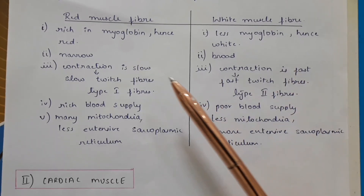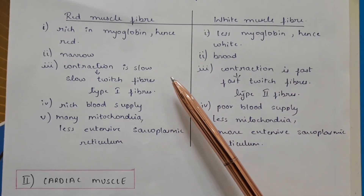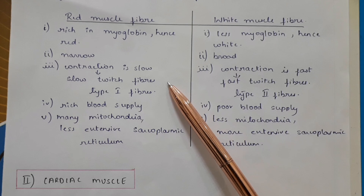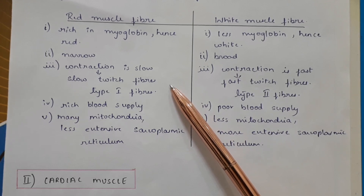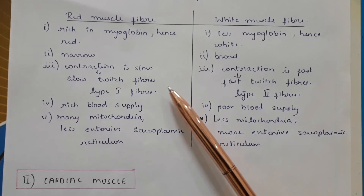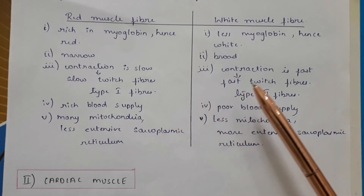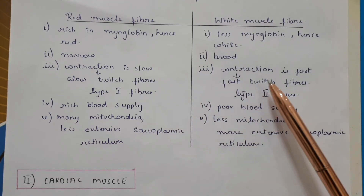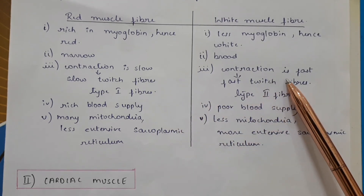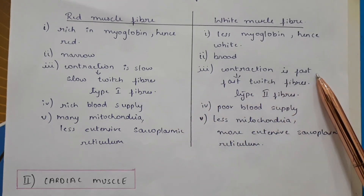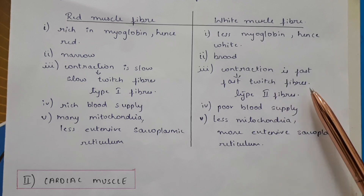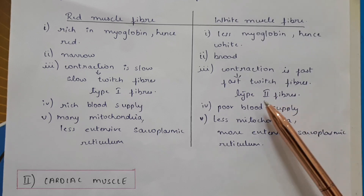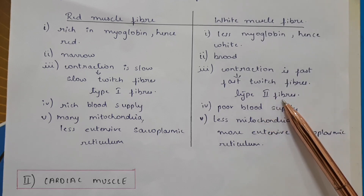Red muscle fibers are narrow; white muscle fibers are broad. Contraction in the red muscle fiber is slow — these are the slow twitch fibers, also called type 1 fibers. Contraction in the white muscle fiber is fast — these are the fast twitch fibers, also called type 2 fibers.